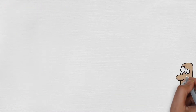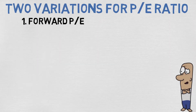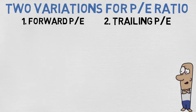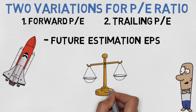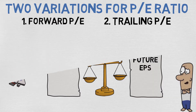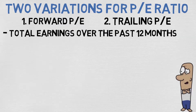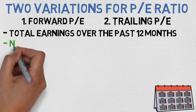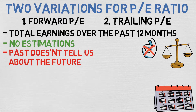So why do we need to know those two different variations? Because there are also two variations for PE ratios: forward PE ratio and trailing PE ratio. The forward PE ratio uses future estimated earnings per share, meaning you can compare the current earnings with the estimated future earnings to get a better picture of your investment. The trailing PE ratio uses the total earnings over the past 12 months, so there are no estimations included — making it the most objective PE ratio.